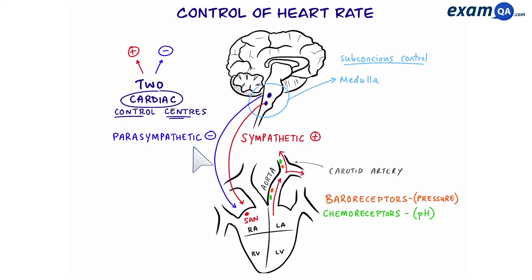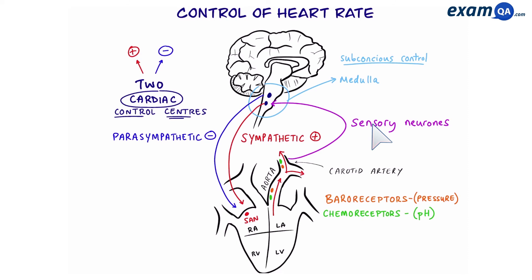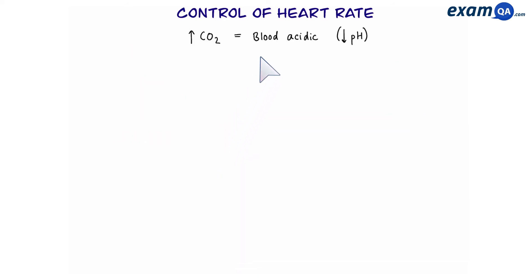Let's see this in action. When blood travels through the heart, passing the aorta and carotid artery, the baroreceptors and chemoreceptors measure the blood's pH and pressure. Then, via sensory neurons, they send this information to the cardiac control centers. Depending on the blood's pH and pressure, one of the cardiac control centers will be activated. If the heart needs to beat faster, the sympathetic neuron sends more frequent impulses. If the heart needs to slow down, the parasympathetic neuron will send more impulses to the SAN.